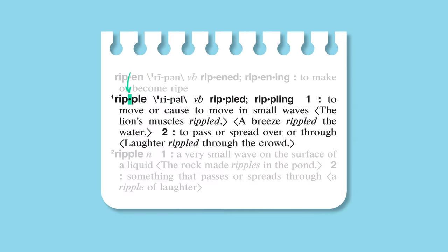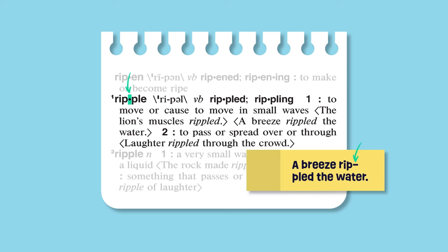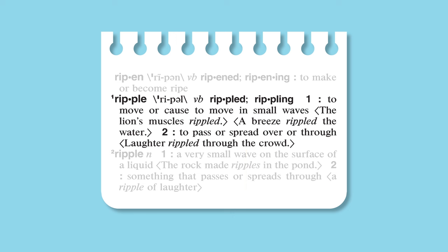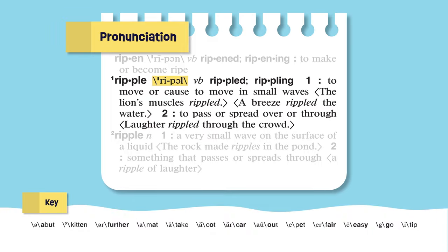This dot between the P's in ripple shows you where you can divide the word with a hyphen if it doesn't all fit in one line when you're writing it down. Dictionaries also tell us how to say a word with its pronunciation. There are some familiar letters here, as well as some special symbols that represent specific sounds. You can find out what these symbols mean by looking at the key on the bottom of each page.